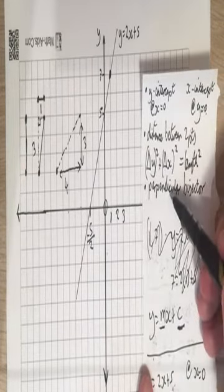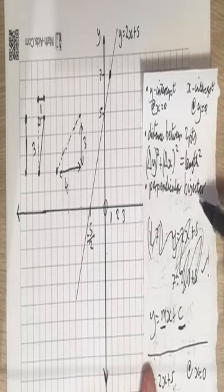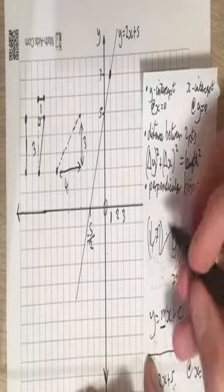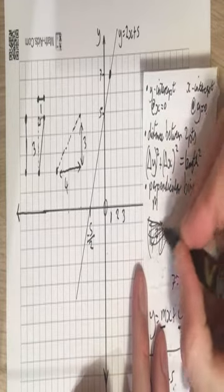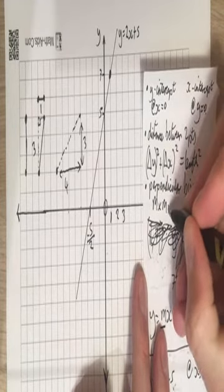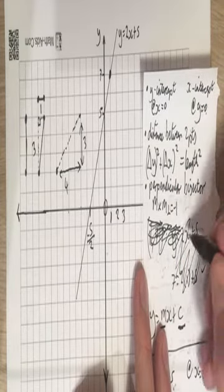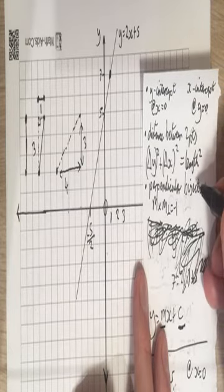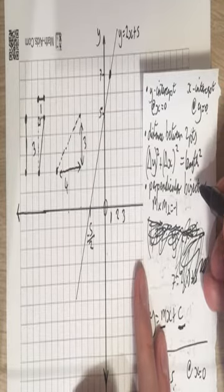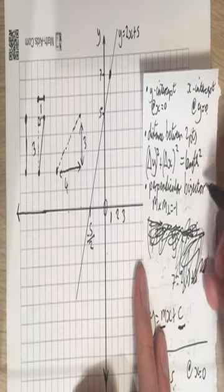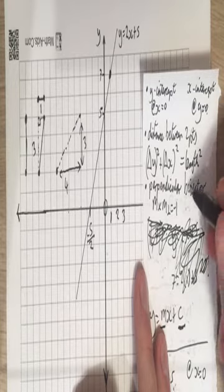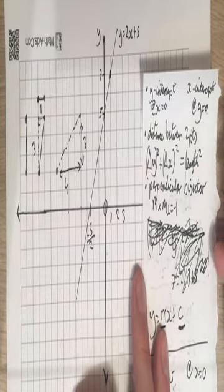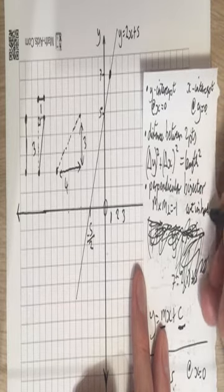Perpendicular bisector. Perpendicular — we learnt last lesson — means at right angles. The gradient m times the perpendicular gradient m-perp equals minus 1. Bisector: bi means two, like bicycle (two wheels) or biped (two feet). Sect is like a section — a part of a thing. So bisector is something that cuts into two equal parts. Bisector means cut in half.